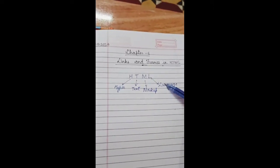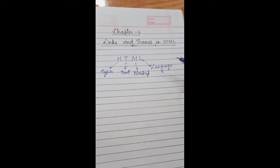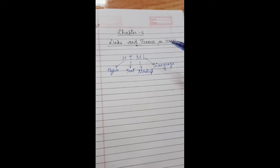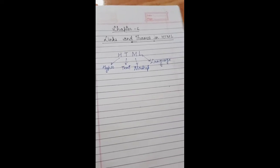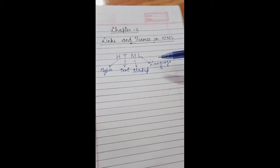And language - language is used for communication. If you want to communicate you need a language. So what is HTML? HTML is a hyper text markup language. What is this? This is hyper text markup language and this language is used to create web pages.